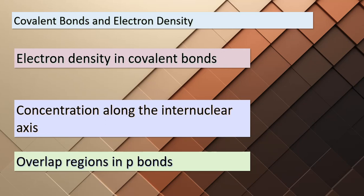Now let's talk about a specific type of covalent bond: the pi bond. In a pi bond, there are captivating regions of overlap located both above and below the internuclear axis. These overlapping regions collectively constitute a single pi bond. Let's visualize this concept further.